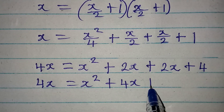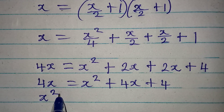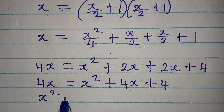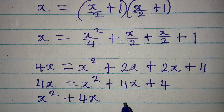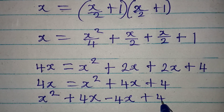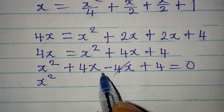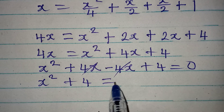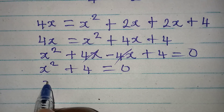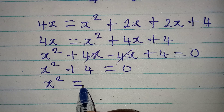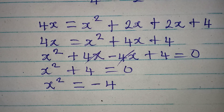Rearranging: x squared plus 4x minus 4x plus 4 equals 0. The 4x terms cancel, leaving x squared plus 4 equals 0. Taking 4 to the other side: x squared equals negative 4.